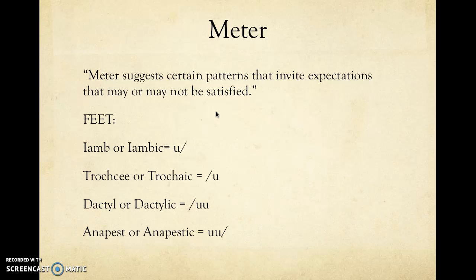There are a few ways of naming these patterns. An iamb is when you have a line of verse that goes unstressed, stressed, over and over again. A trochee is stressed then unstressed. A dactyl is stressed, unstressed, unstressed. And an anapest is unstressed, unstressed, stressed.